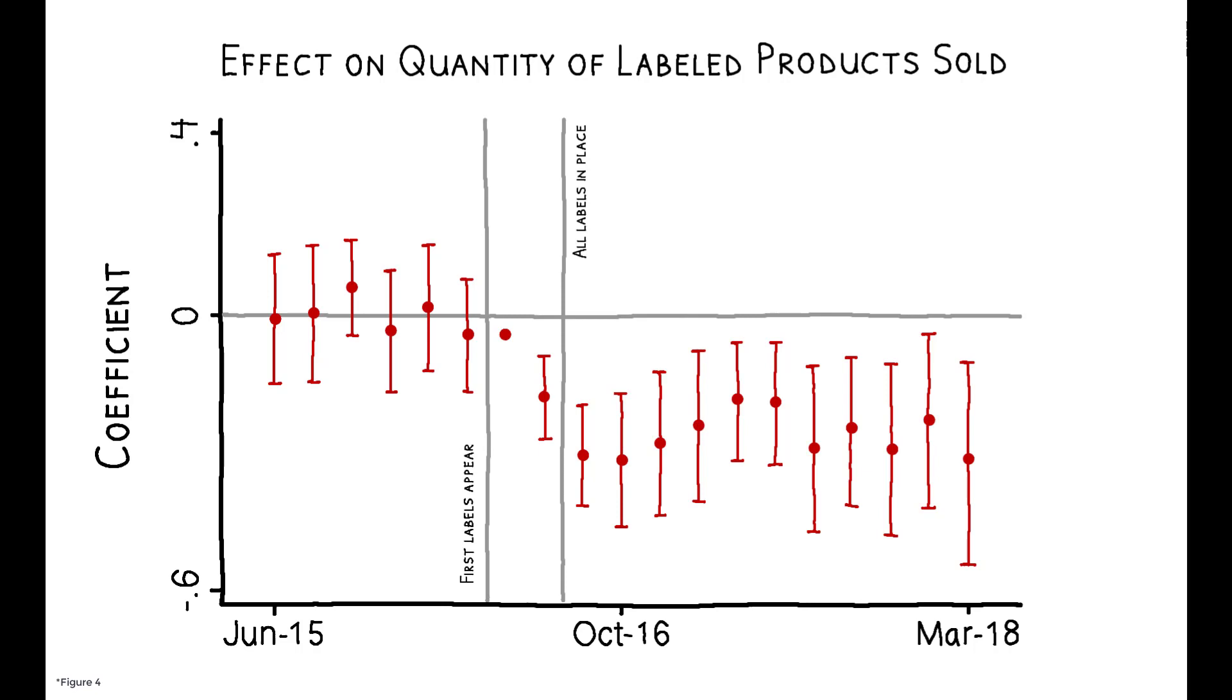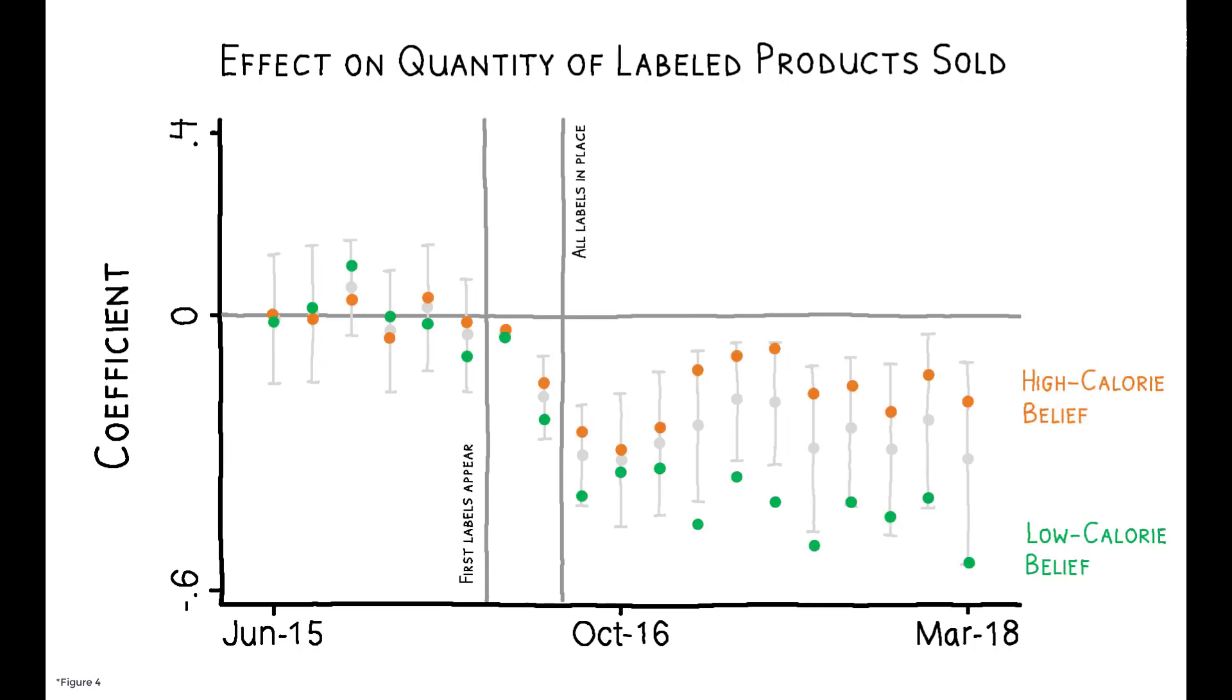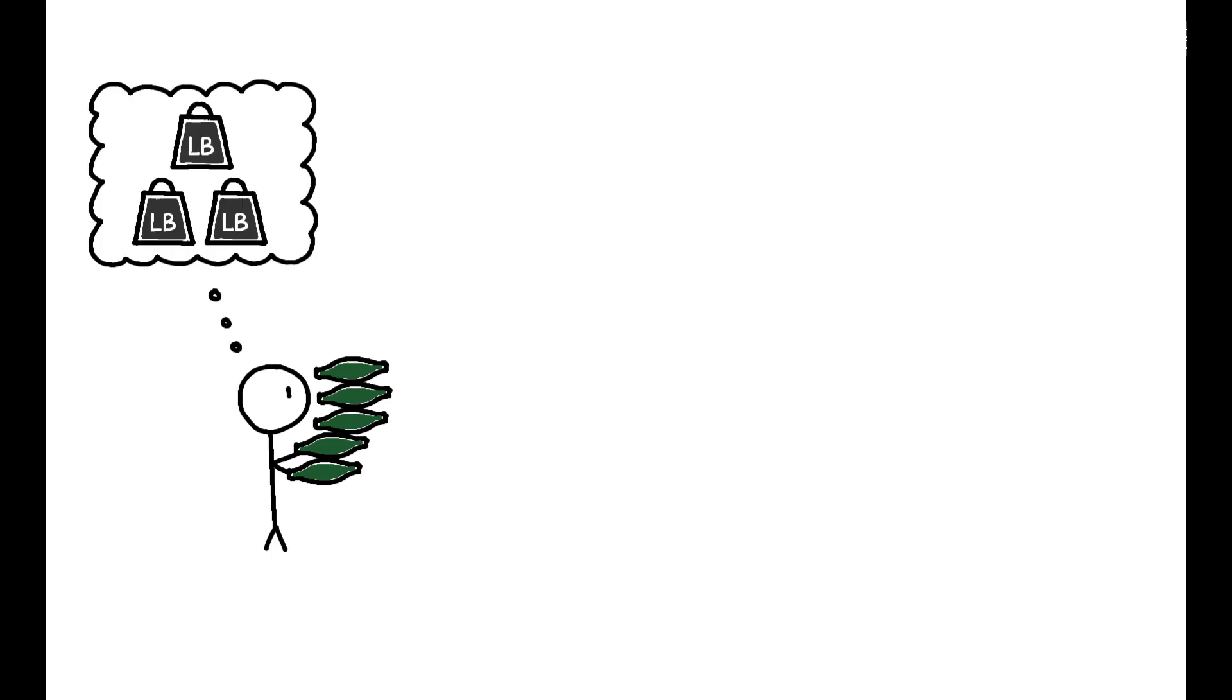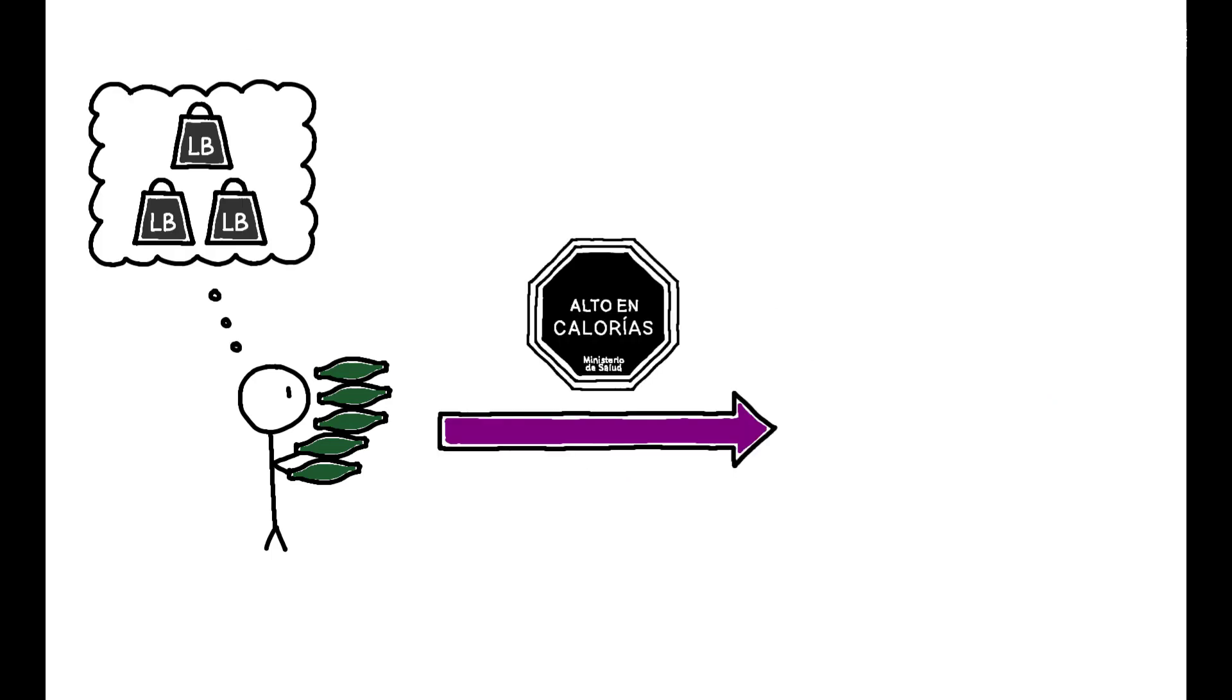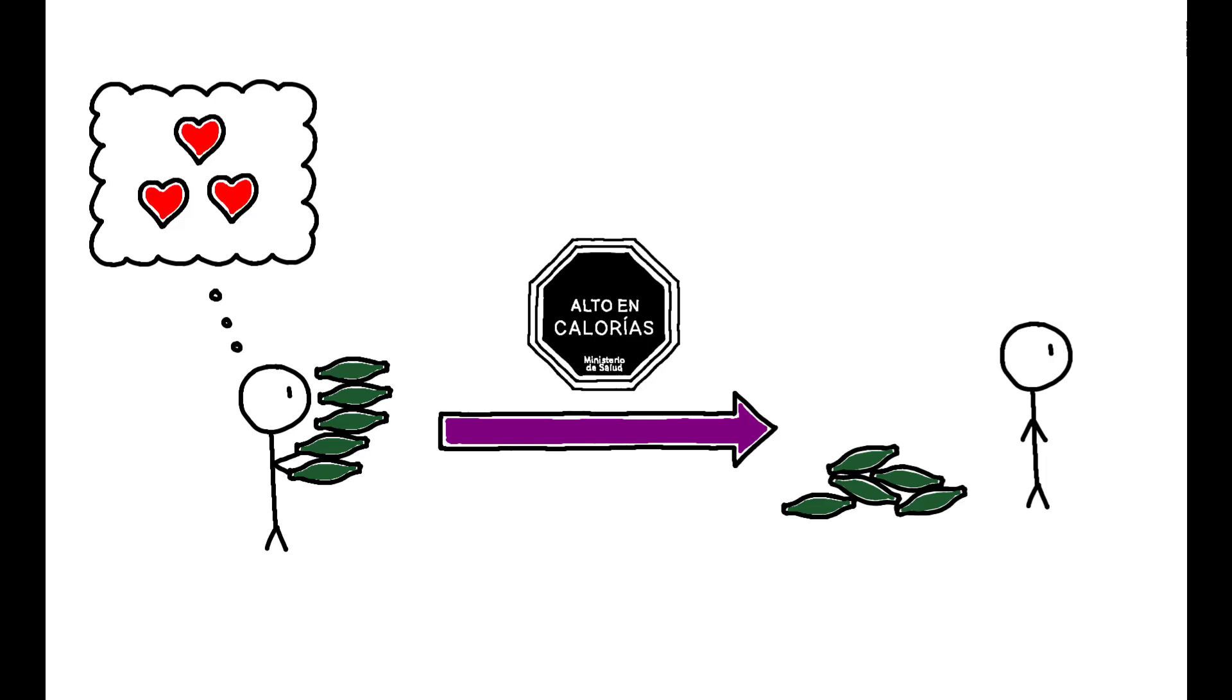Notably, consumer beliefs play an important role. A decomposition shows this decline is driven by products that consumers mistakenly believe to be low in calories. In other words, if consumers already believe a product to be unhealthy, adding a label has no significant effect. But when labels correct a mistaken belief, they have large effects on consumer behavior.